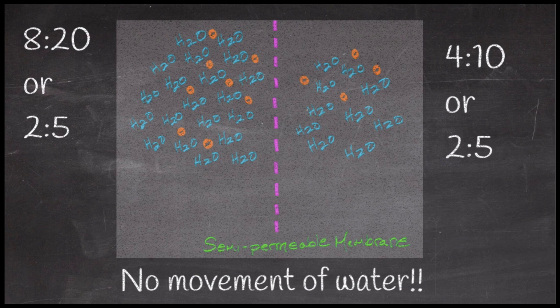In this first case, we have a ratio of 8 to 20 solutes to solvent on the left, and 4 to 10 on the right. That is the same ratio — 2 to 5. As you can see on the left, there are more solutes than there are on the right, but because there are more water molecules on the left, the ratio is the same. So there would be no net movement of water in this depiction.